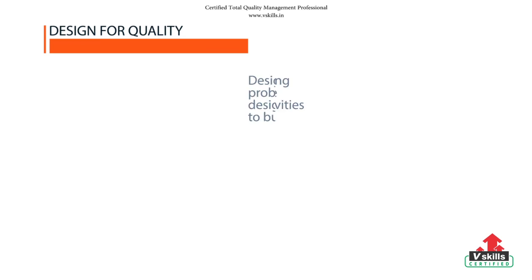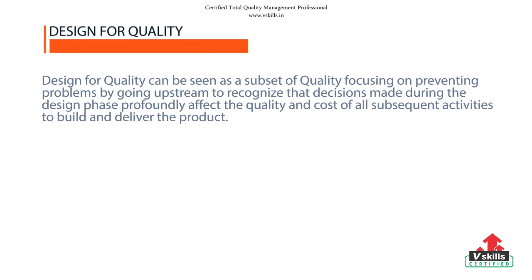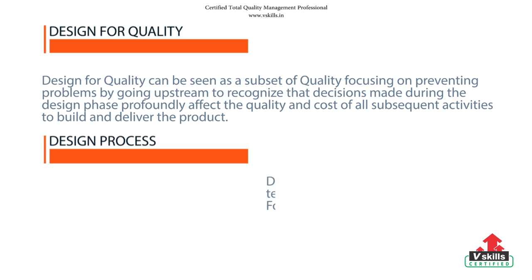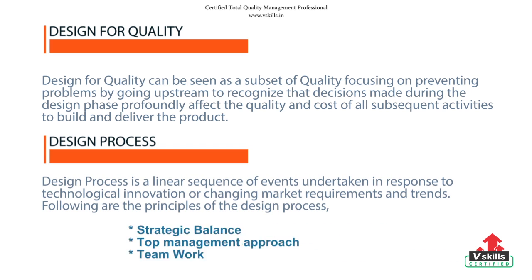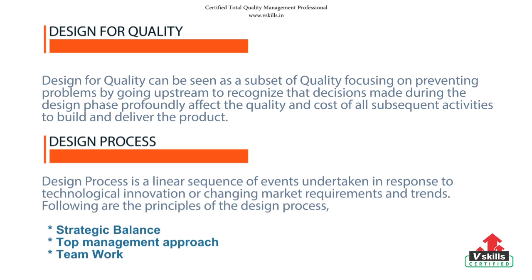In this tutorial we'll talk about Design for Quality. Design for Quality is a proactive, rigorous, systematic method using tools, training, and measurements for integrating customer requirements into the product development process. It strives to prevent defects by transforming customer wants and expectations to what can be produced.